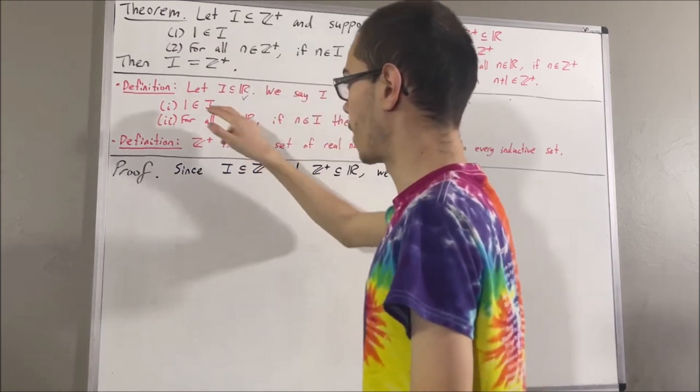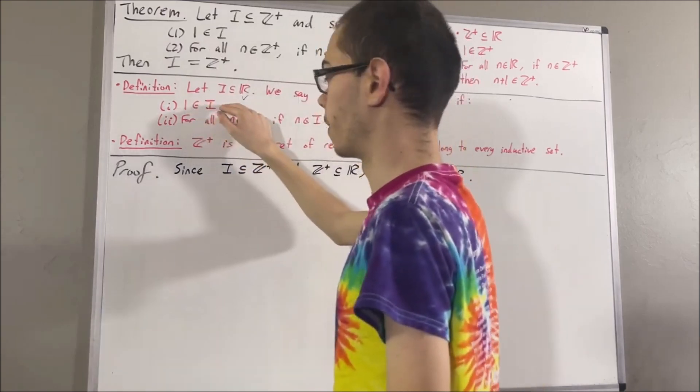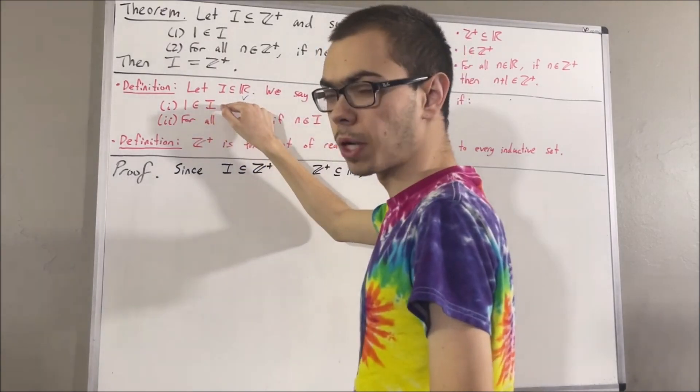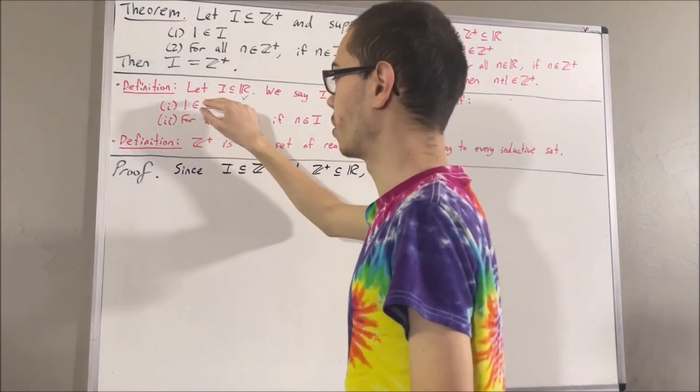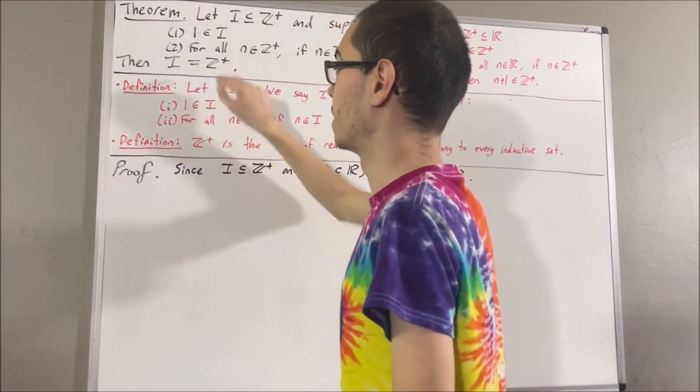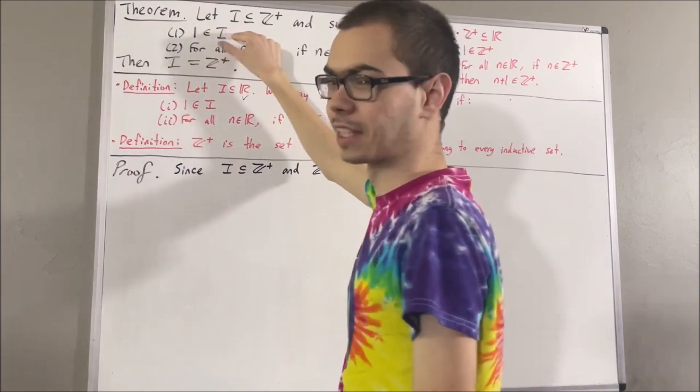Next, let's verify that 1 is an element of i. We already know that 1 is an element of i — that's the first thing that we're given.